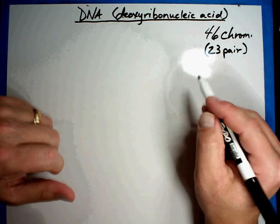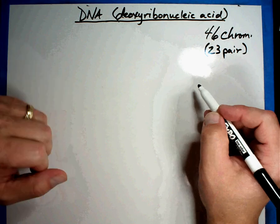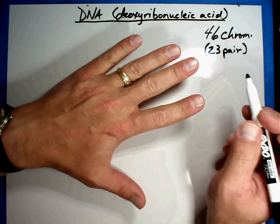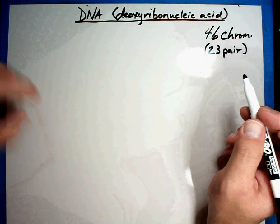It tells everything about you. It tells you what eye color you'll have, how tall you'll be, what size hands you'll have, how your nails are formed. Everything about you and me comes from our chromosomes.